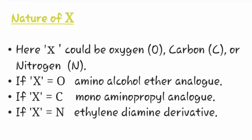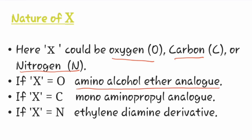Now let us see about the nature of X. Here X does not represent halogen. X could be oxygen, carbon, or nitrogen. Oxygen, carbon, or nitrogen provides the basis of classification of classic antihistamines. If X equals O, it is known as an amino alcohol ether analog. If X equals C, it is known as a monoamino propyl analog. And if X equals N, it is known as an ethylenediamine derivative.